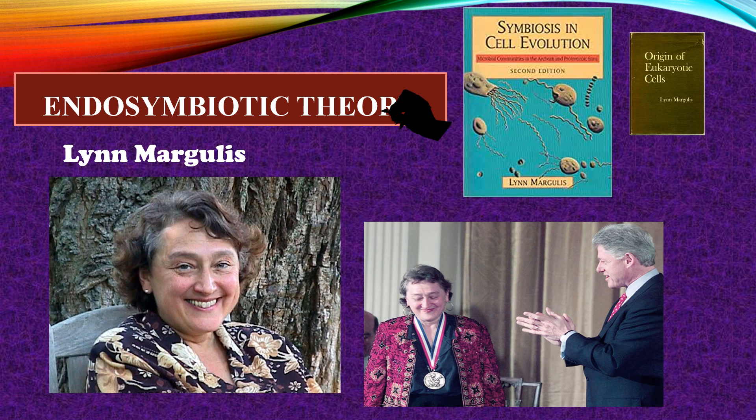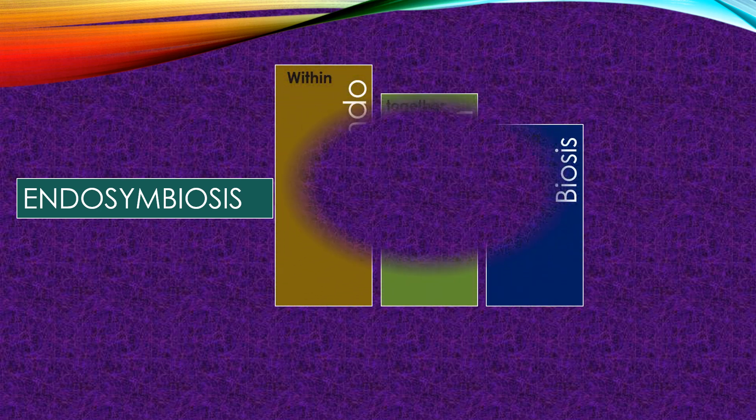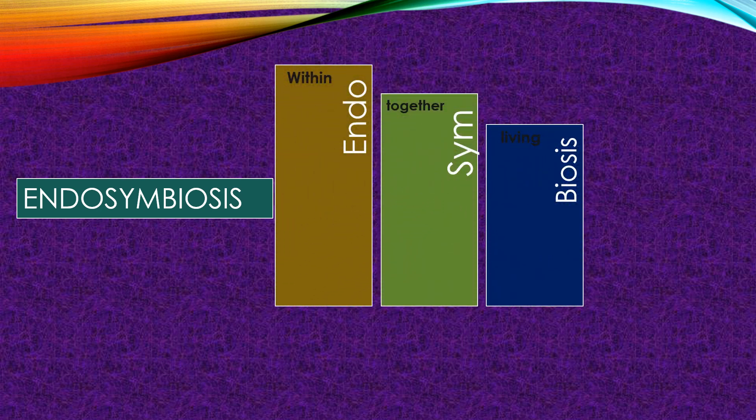The word 'endosymbiotic' is derived from Greek words. 'Endo' means inside, and 'symbiotic' refers to organisms living together with mutual benefits.